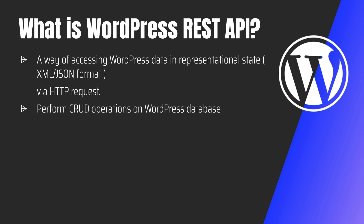Now you can perform the CRUD operations on the WordPress database. With the help of the WordPress REST API you can make a GET request to get data from WordPress, you can create data like posts, categories, taxonomies, or you can delete some data from WordPress, and you can also update data — you can perform all the CRUD operations using the WordPress REST API.